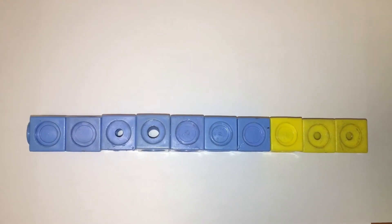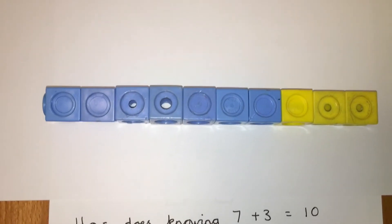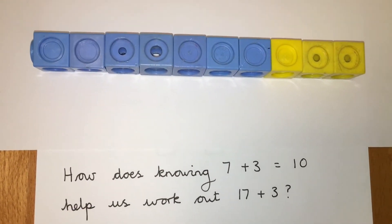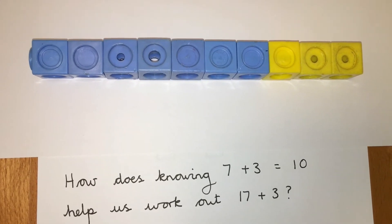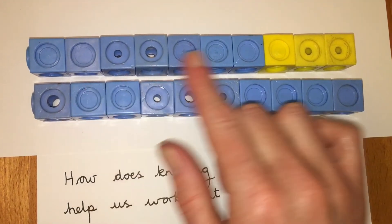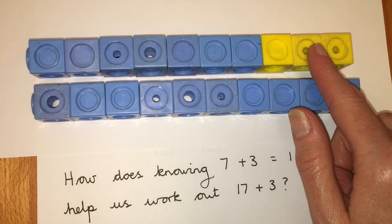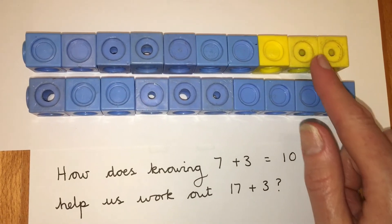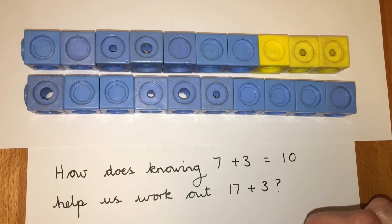What have we got this time? We've got 7 plus 3 equals 10, don't we? How does knowing 7 plus 3 equals 10 help us to work out 17 plus 3? Well, again, we know that 17 is made up of 10 and 7 more. So if we know 7 plus 3 equals 10, 17 plus 3 is just 10 more. So it's 20.